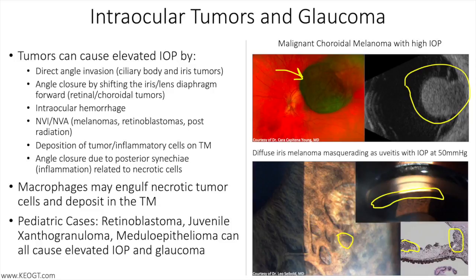Different treatment modalities include intraocular pressure-lowering medications. Prostaglandin analogs are the primary medication class of choice in almost all cases of tumor-related IOP elevation. Caution must be taken in cases where anterior segment tumors are being followed, as prostaglandin analogs can induce changes in pigmentation that could be confused with tumor extension. This concern, however, is typically related only to iris melanomas and not other intraocular tumors.